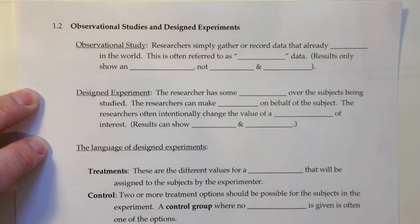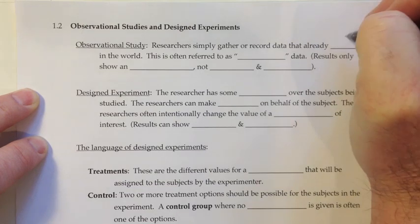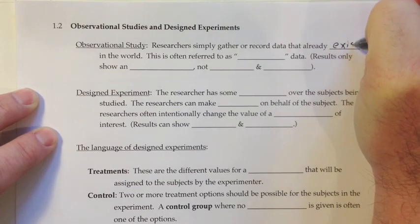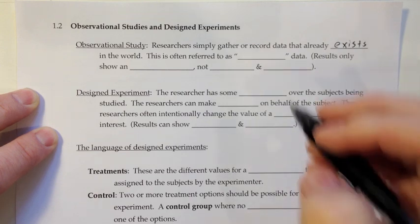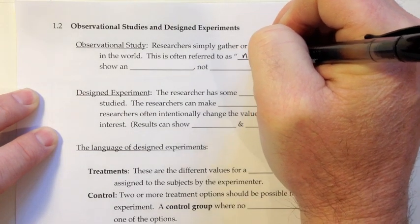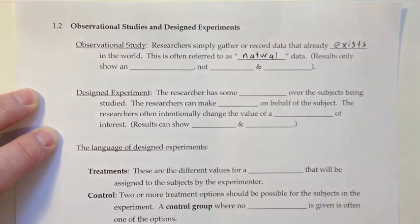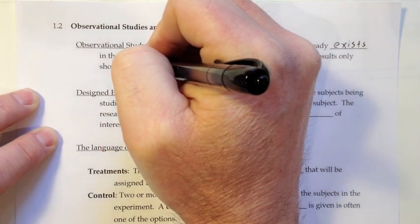In section 1.2, we're going to look at the difference between observational studies and designed experiments. In an observational study, researchers simply gather or record data that already exists in the world. This is often referred to as natural data, and the results can only show an association, not cause and effect.